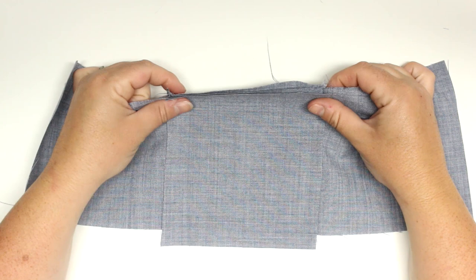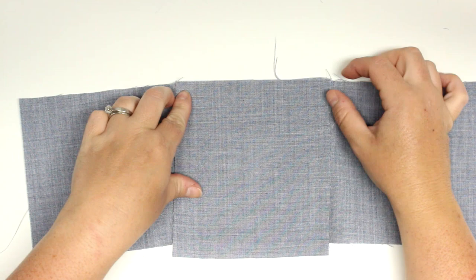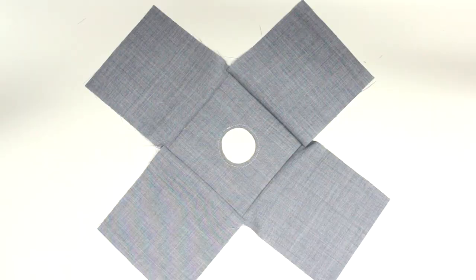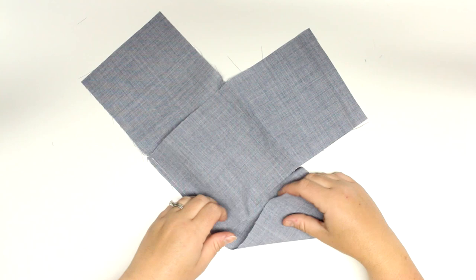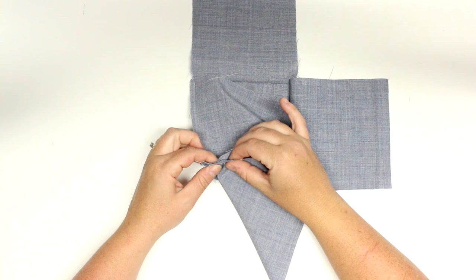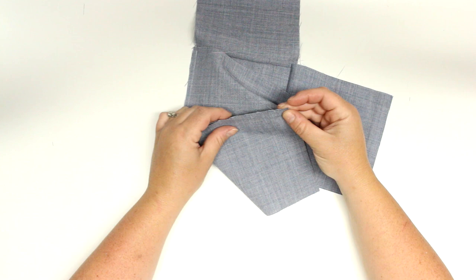So I'm just attaching all four panels one at a time and it will look like this. And then I will take the sides of the panels and then line them up and then sew a quarter of an inch seam allowance. And then once you've done all four of your sides, then it will look like this.